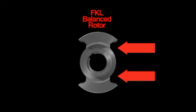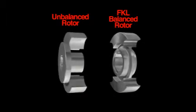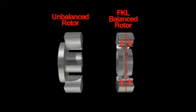With a Fristam FKL rotor, the support hub is centered so that force acts through the center of the rotor to keep the lobes from deflecting.